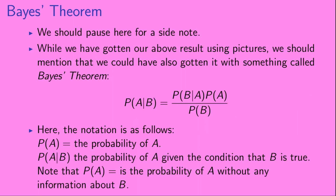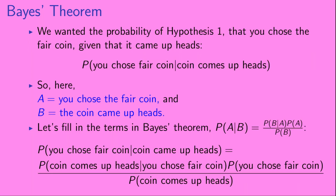We should pause here for a side note. While we've gotten our above result using pictures, we should mention that we could have also gotten it with something called Bayes' theorem. The notation is as follows: P of A is the probability of A, P of A given B is the probability of A given the condition that B is true, and P of A is the probability of A without any information about B. So we wanted the probability of hypothesis 1 — that you chose the fair coin — given that it came up heads. Here, A equals the hypothesis that you chose the fair coin, and B equals the event that it came up heads.